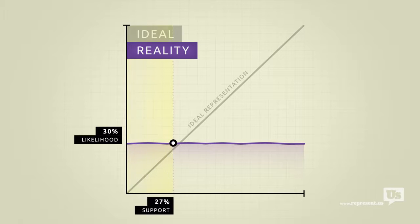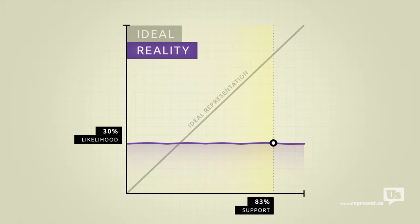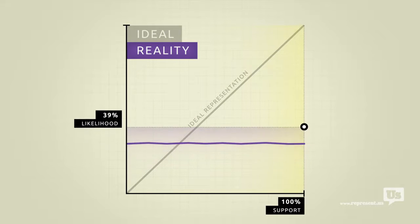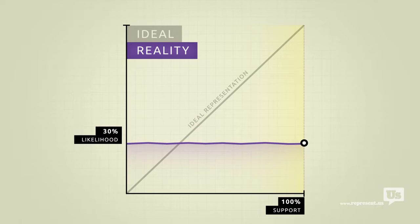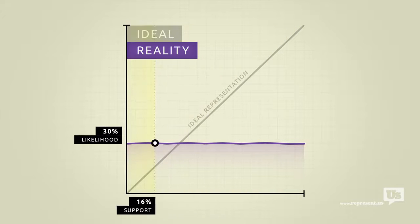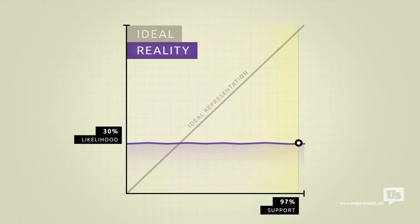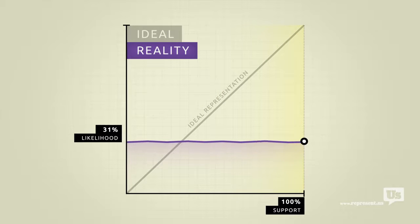Now take an incredibly popular idea, the most popular idea this country has ever seen, and there's also about a 30% chance of it becoming law. This means that the number of American voters for or against any idea has no impact on the likelihood that Congress will make it law.